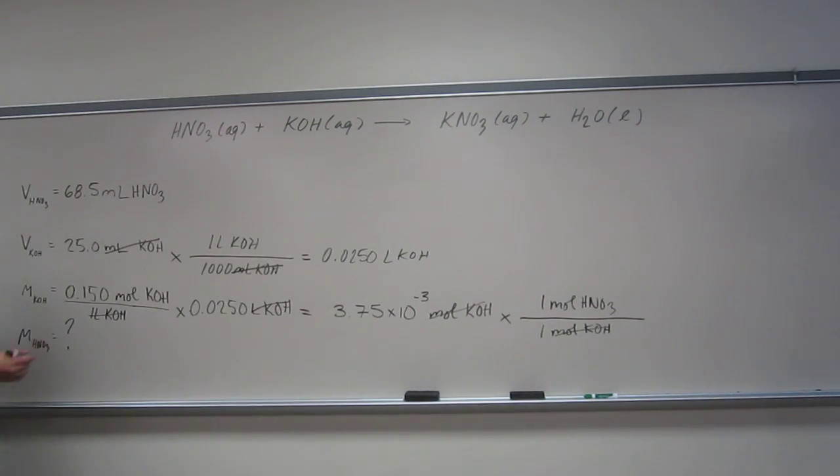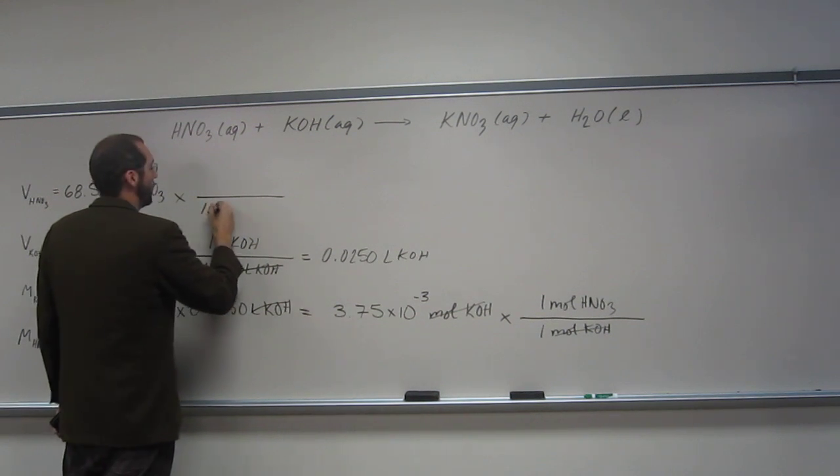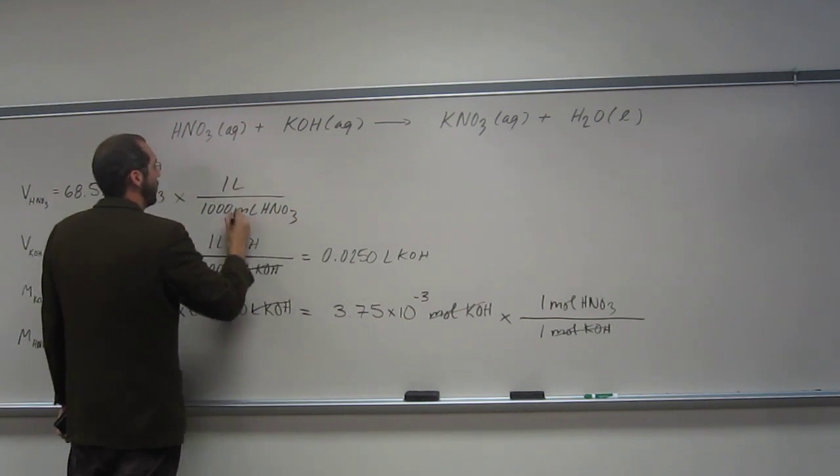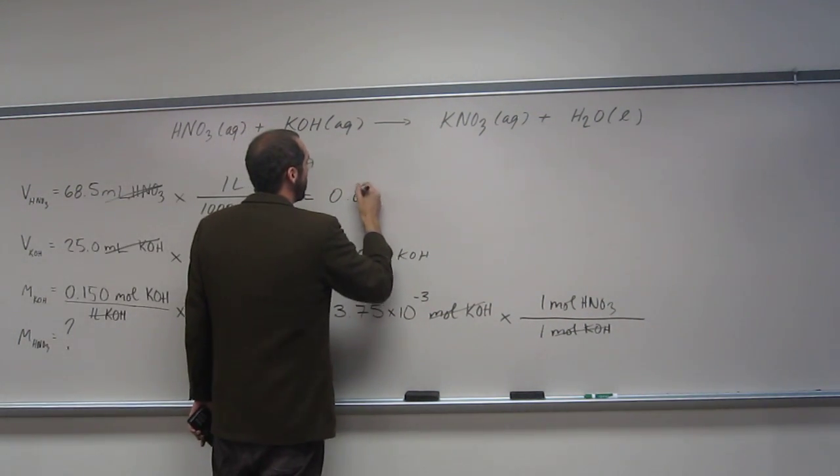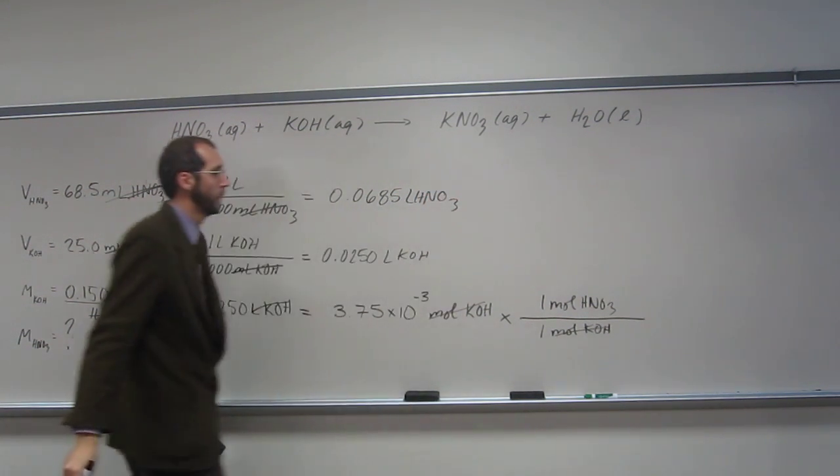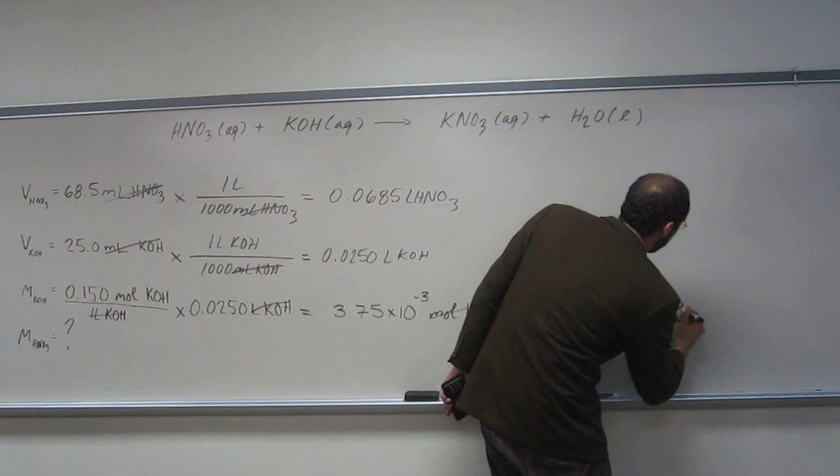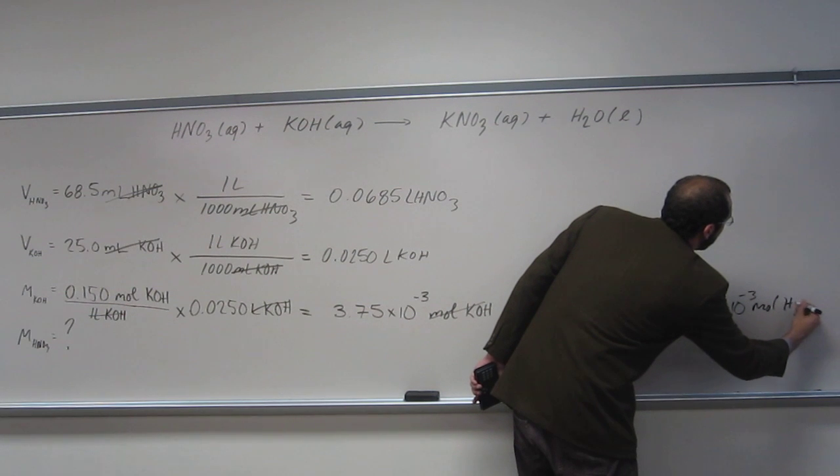Remember, we're looking for the molarity of nitric acid. To get molarity, we need volume in liters. So that'll give us the volume in liters, 0.0685 liters nitric acid. Oh, we didn't finish this calculation, but this is 3.75 times 10 to the negative 3 moles of nitric acid.